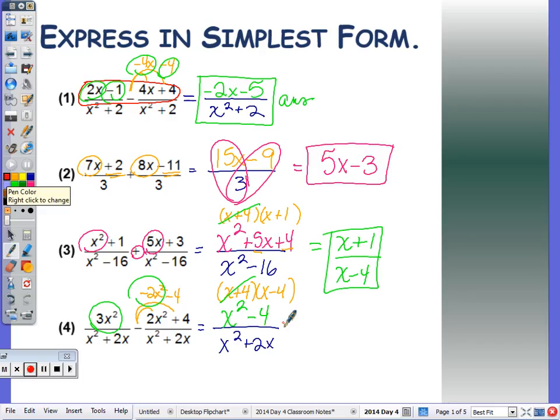Now to simplify, I factor, cancel. This is the difference of two perfect squares, so that's x plus 2 times x minus 2.